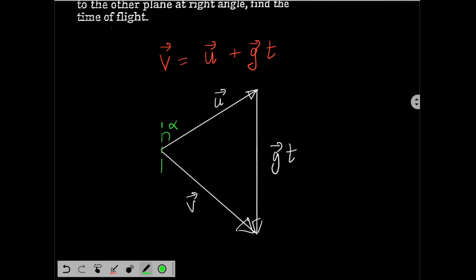This angle is alpha for u vector with the vertical and v vector is making angle beta. That means this angle is alpha. This angle is beta. And this angle will be pi minus alpha minus beta. Now, here we can apply Lamy's theorem.